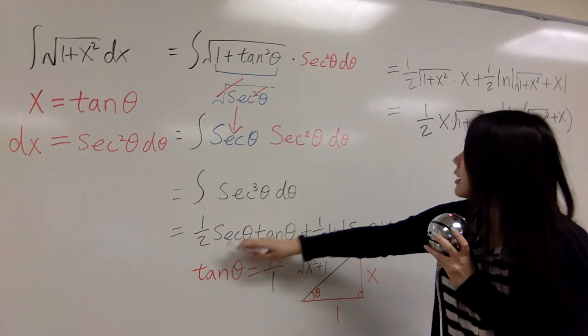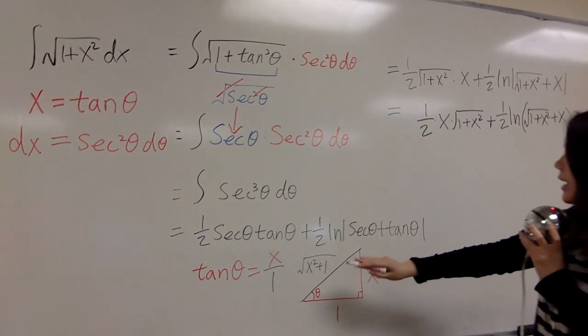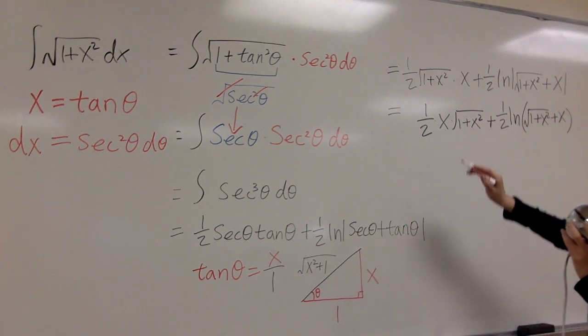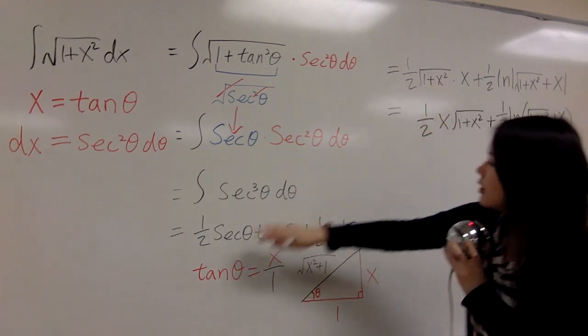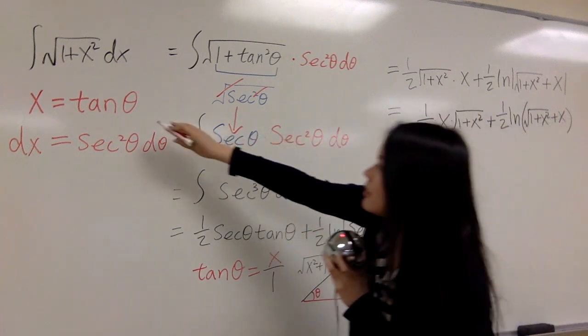Secant theta is square root of x squared plus 1 over 1, and the same as square root of x squared plus 1. So one-half secant theta - so one-half secant here - tangent theta is x, what we set here.